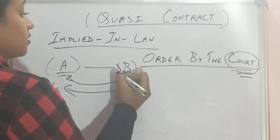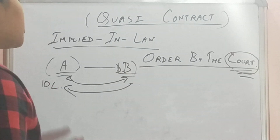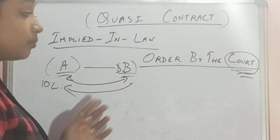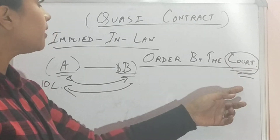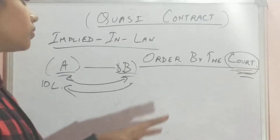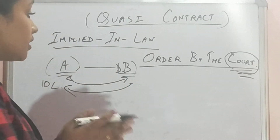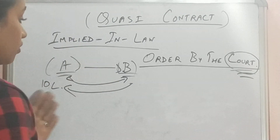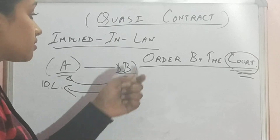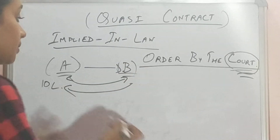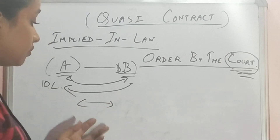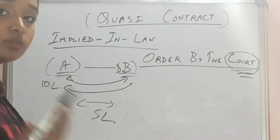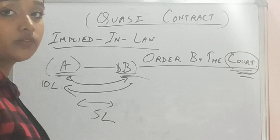So here we can say that if there is no agreement between both the parties, then the court can help them by making a quasi contract so that they can come to a midway — a midway where they can adjust. So maybe Mr. A wants 10 lakhs from Mr. B, but Mr. B is not in the state of paying. So maybe they can come to an agreement at a midway of 5 lakhs, where Mr. A is also willing to take 5 lakhs and Mr. B is able to pay off the 5 lakhs.